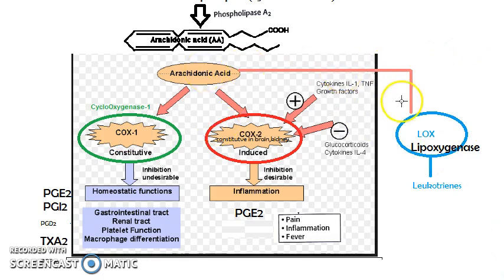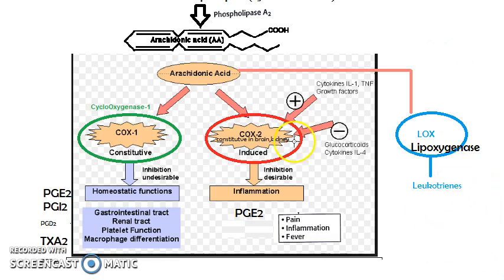Lipoxygenase can act on arachidonic acid and give you leukotrienes. So we have added to what we studied in the previous video — we have now come to the level of understanding lipoxygenase. We have also mentioned all the names of the prostaglandins: PGE2, PGI2, PGD2, thromboxane A2, and PGF2 alpha.